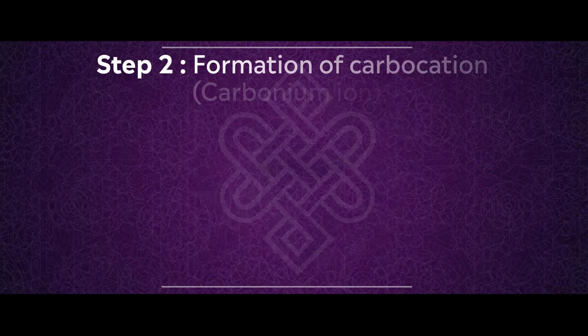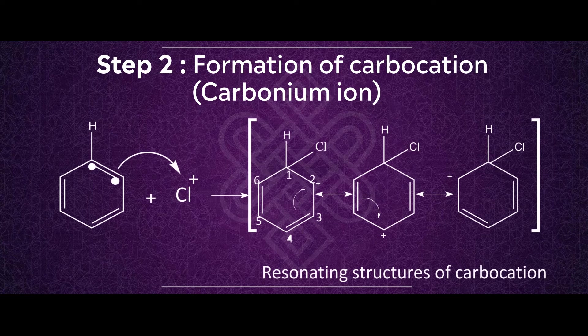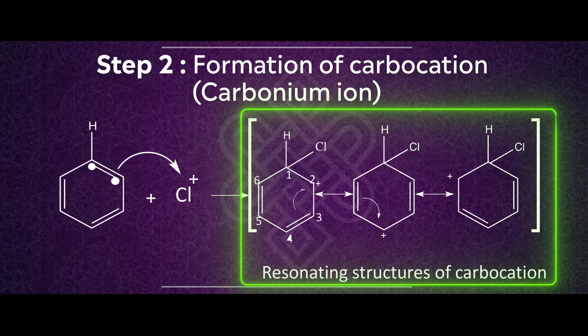Step two: formation of carbocation, also known as carbonium ion. The benzene ring has pi electrons present in it. The electrophile produced attacks the pi electrons of carbon number two in the benzene ring. This results in formation of a carbocation where a positive charge is developed at carbon number two, while the chlorine ion forms a new bond and attaches to carbon number one. This carbocation is moderately stable because it can give resonating structures.